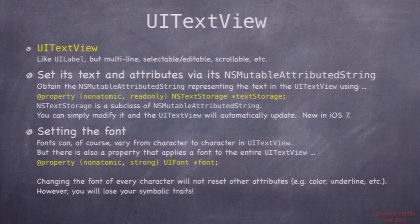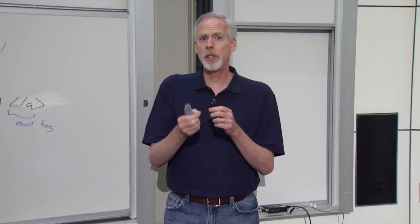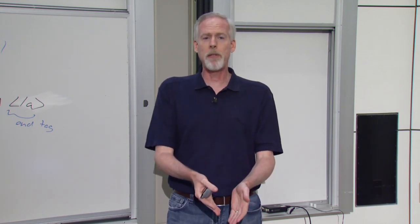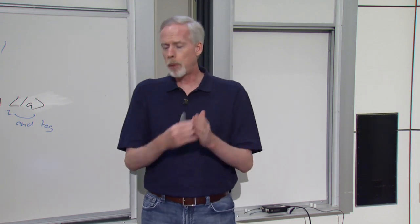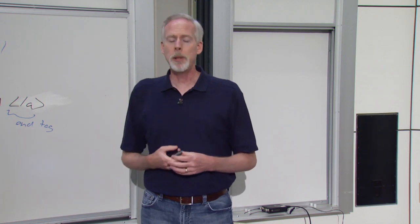There are some methods on UITextView, like the font property, where you can just set the font. However, when you set the font, all it's doing is going through every character in the mutable string and setting the font attribute name to that font. Remember that bold and italic are attributes of the font, and so is the size. So if you call set font, it's going to blast all of your bolds, italics, and sizes. Be a little careful of that.